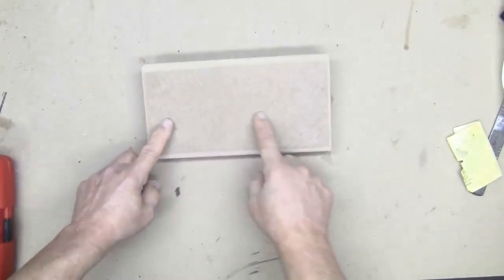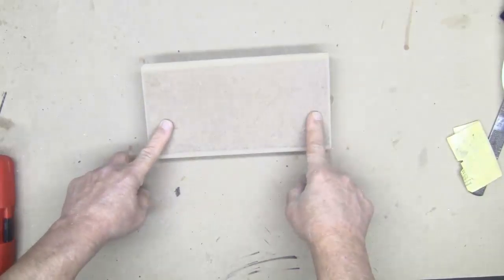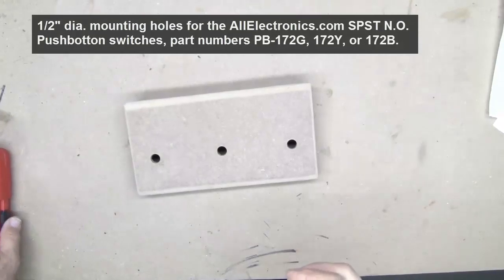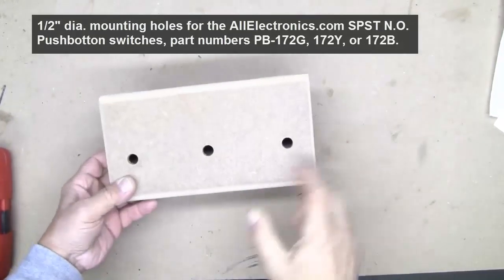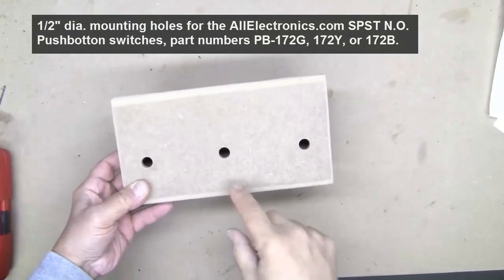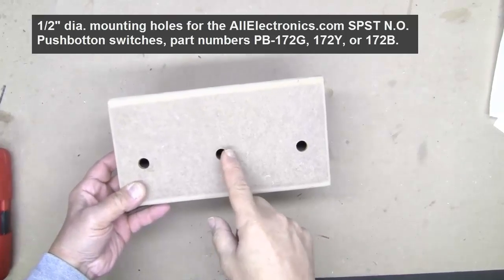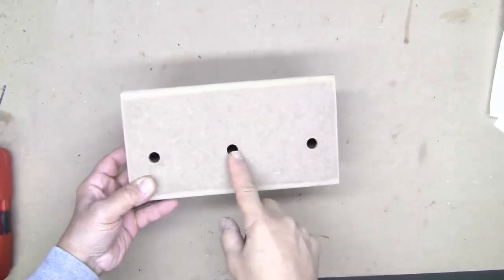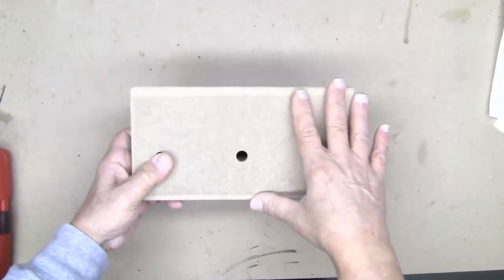And the last thing I have to do is make three holes for the push button switches that are going to go in here. Now the last step was to drill three holes. I've drilled them up around two inches. This one's centered. And each one of these is three and a half inches from the center.